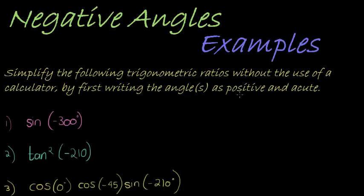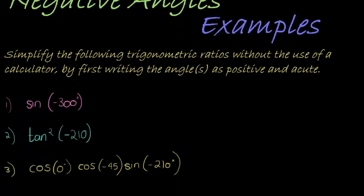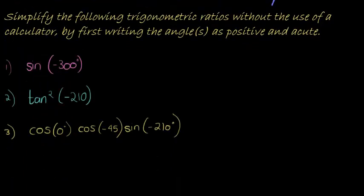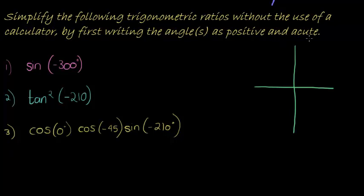Now we get to more complicated examples, and you'll actually notice that it's not that difficult. We just break it down into a step-by-step solution. We draw our cost diagram. We are able to simplify the following trigonometric ratios without the use of a calculator by first writing the angles as positive and acute.